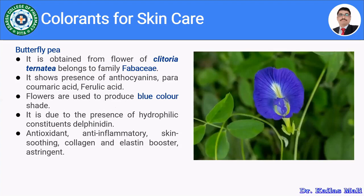The next coloring agent is from butterfly pea. The butterfly pea is obtained from the flowers of Clitoria ternatea, belonging to family Fabaceae. It shows presence of anthocyanin, p-coumaric acid and ferulic acid. The flowers are used to produce a blue color shade used in various skin care products. This is due to the presence of hydrophilic constituent delphinidin present in butterfly pea. It is used as an antioxidant, anti-inflammatory, has skin soothing properties, acts as a collagen and elastin booster, and also has astringent property.